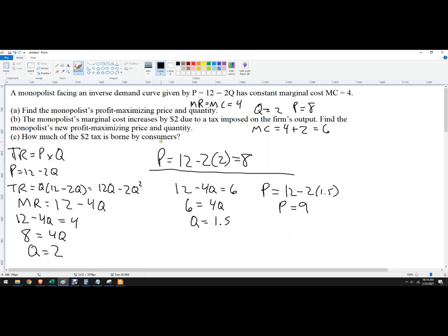How much of the $2 tax is borne by consumers? Well, the answer is all of it. So there's a couple ways to think about this. One is that whichever side has a more elastic curve is going to bear less of the tax. And so what's happening here is since marginal cost is either 4 or 6, it's constant—it's perfectly elastic. It's not really a supply curve, but perfectly elastic marginal cost.